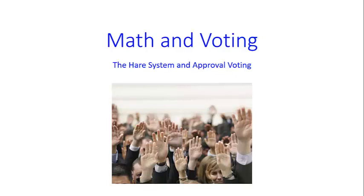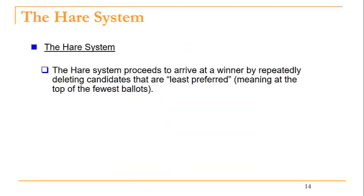This video will discuss the voting methods called the HAIR system and approval voting. The HAIR system proceeds to arrive at a winner by repeatedly deleting candidates that are least preferred, meaning we delete the candidates that are at the top of the fewest ballots.